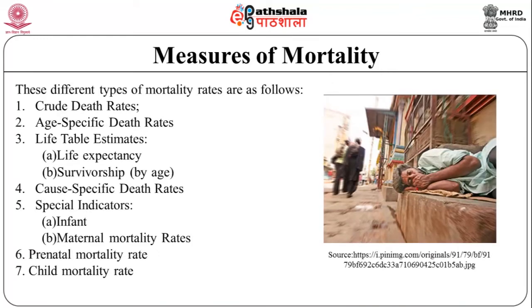Let us now see the different measures of mortality. The different types of mortality measures are: crude death rate; age-specific death rates; life table estimates including life expectancy and survivorship by age; cause-specific death rates; and special indicators such as infant mortality rate, maternal mortality rate, prenatal mortality rate, and child mortality rate.